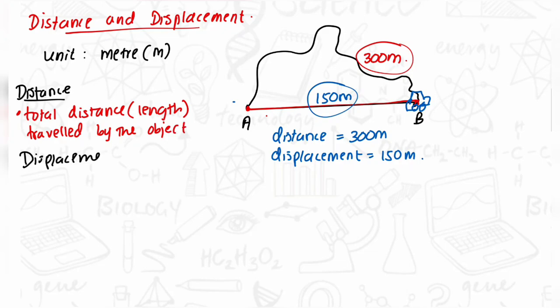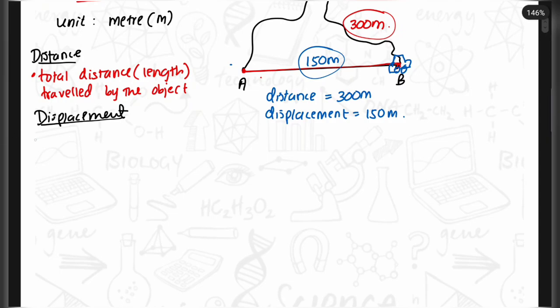Now if we write the definition for displacement: Displacement is the shortest distance between the initial position and the final position.